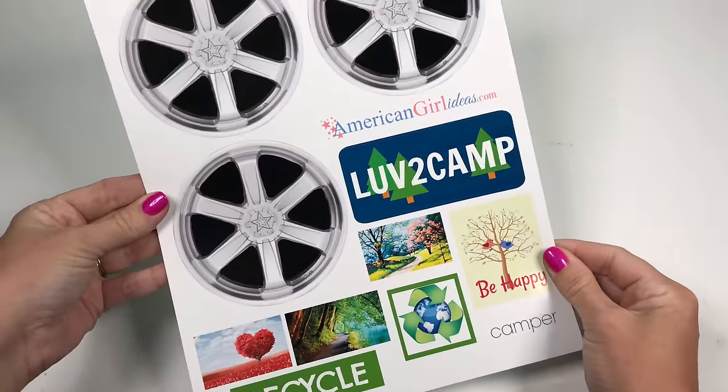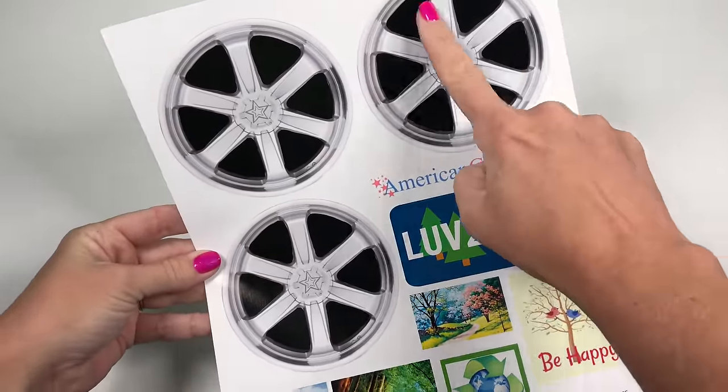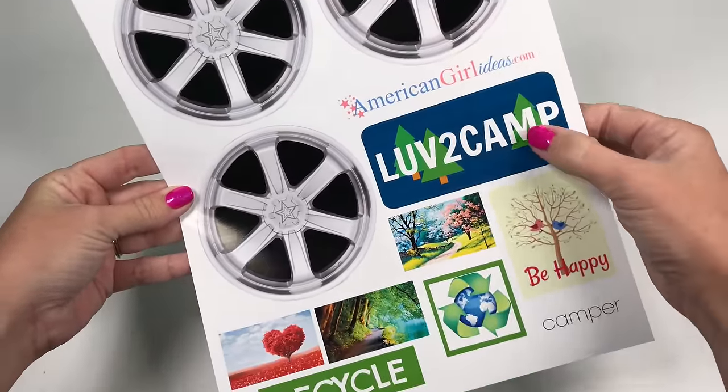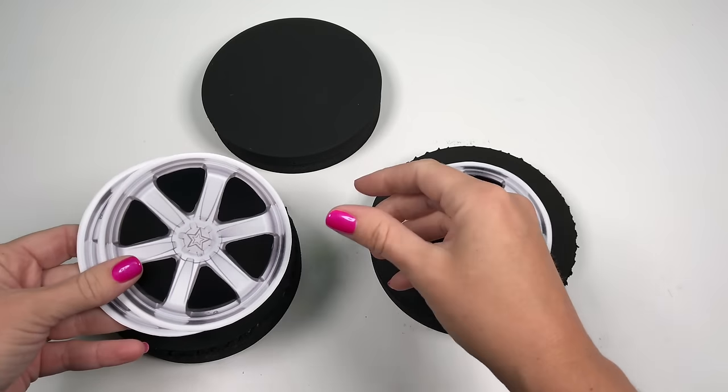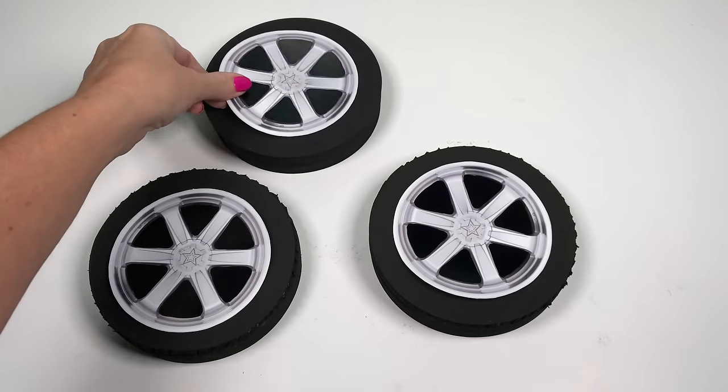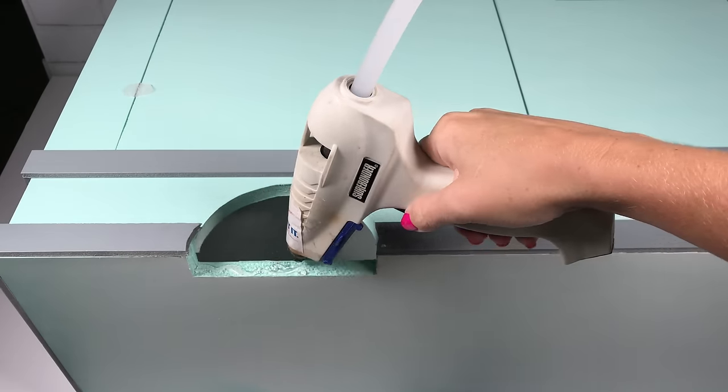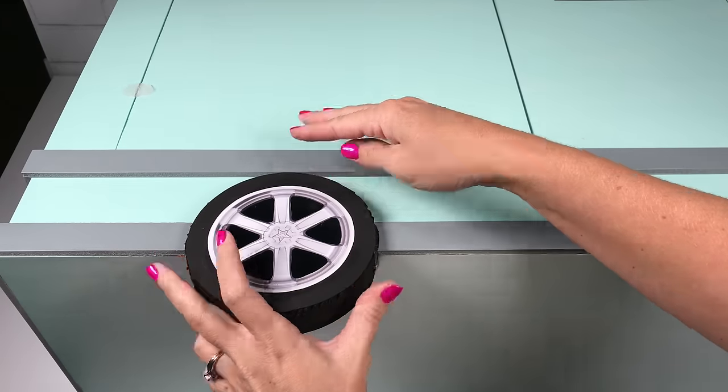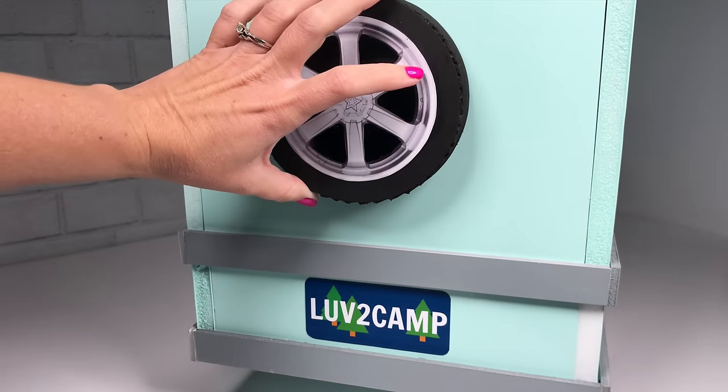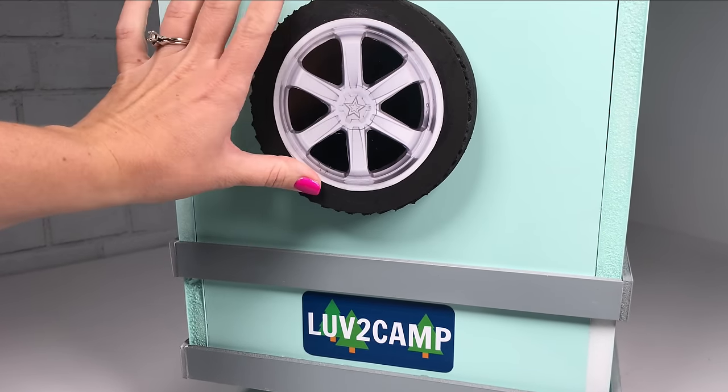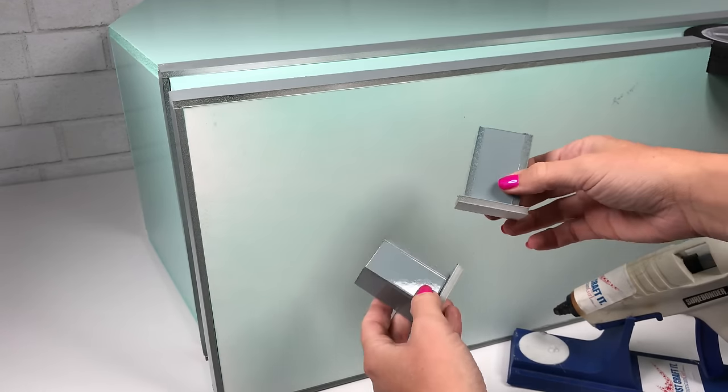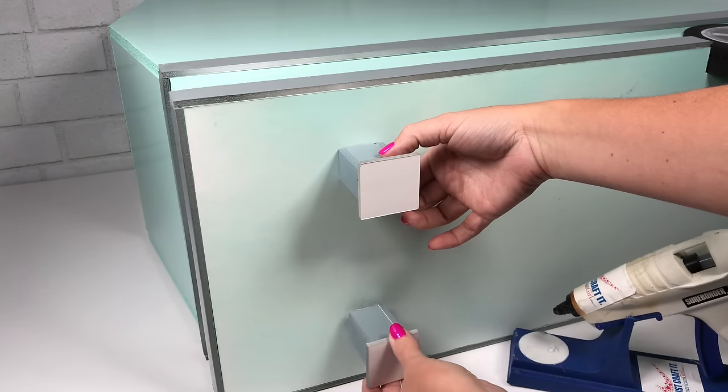For the rims, I've provided printables along with some other fun photos to put in your camper. Using a glue stick, you can glue the rims onto the tires and then using hot glue, you can glue the tires onto the camper. One on each back side and then a spare on the back. And don't forget to glue on the front support so your camper doesn't tilt over.